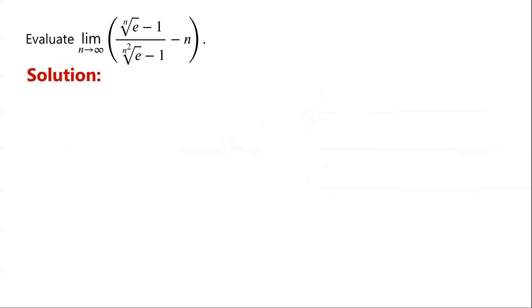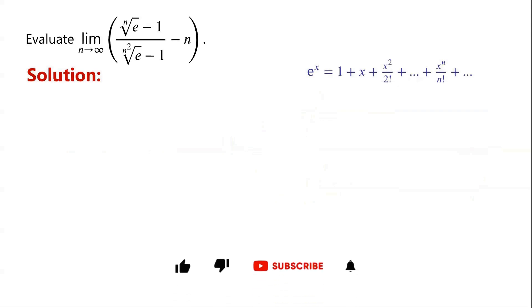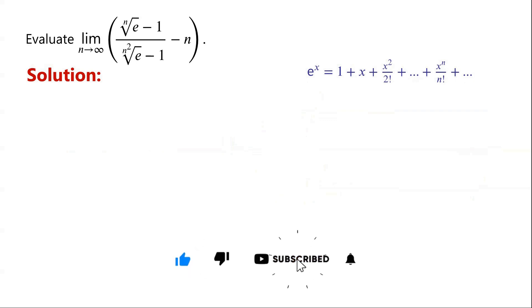We know that the Taylor expansion of e to the power of x is equal to 1 plus x, plus x squared over 2 factorial, plus so on, plus x to the power of n over n factorial, plus so on.